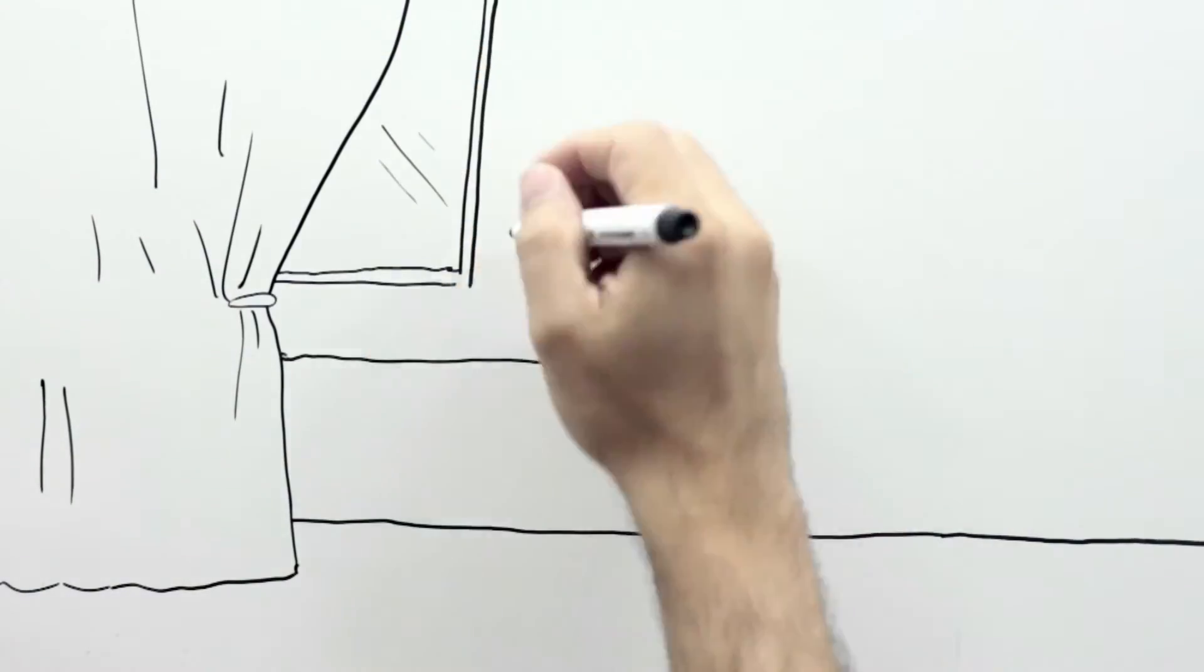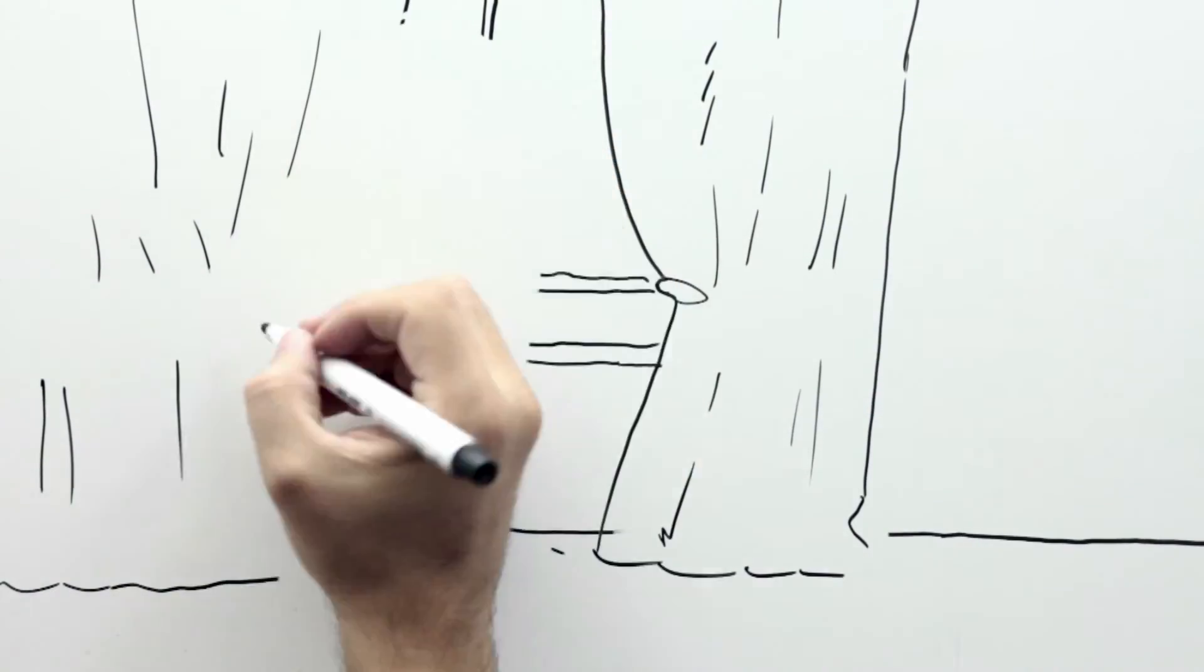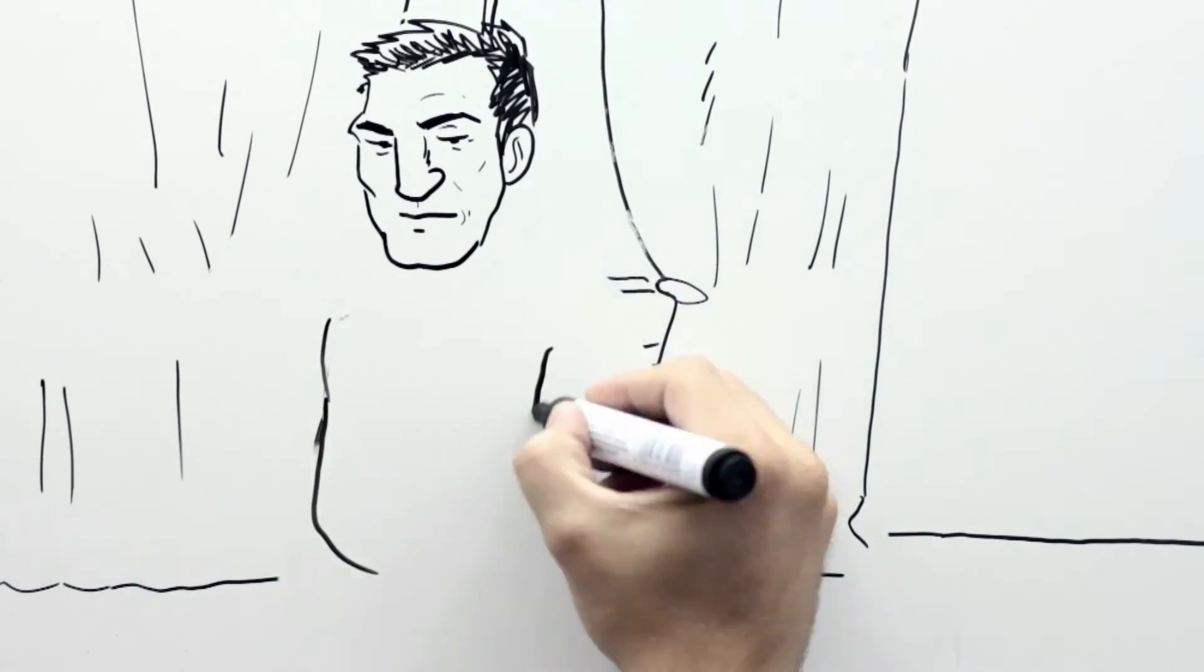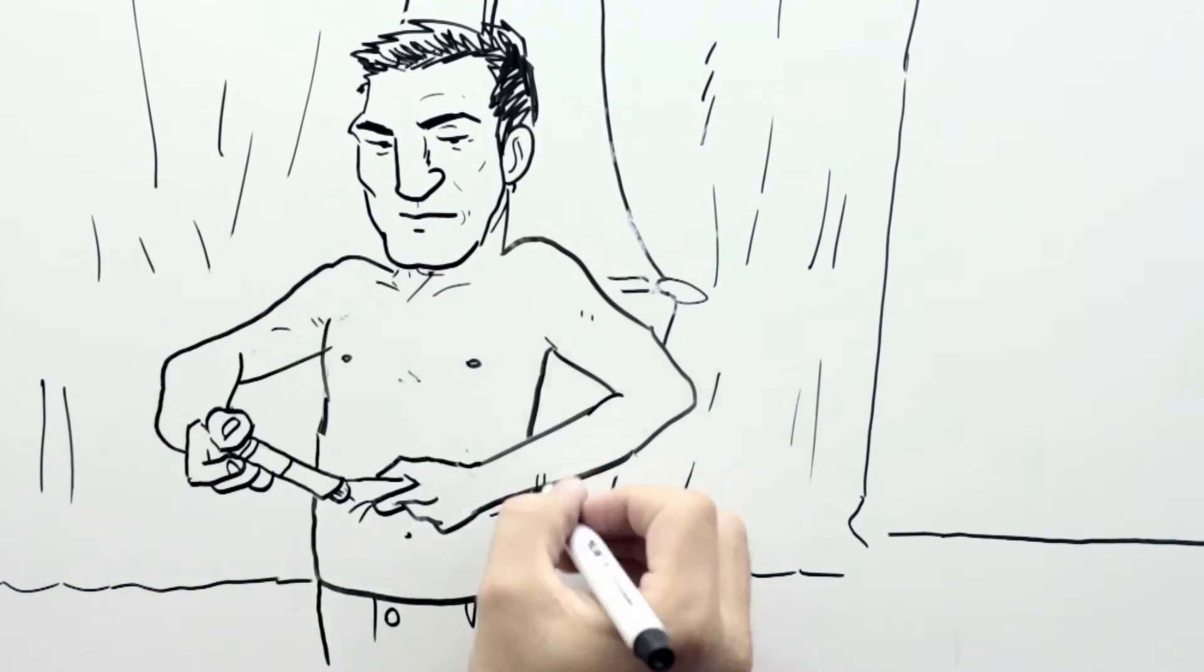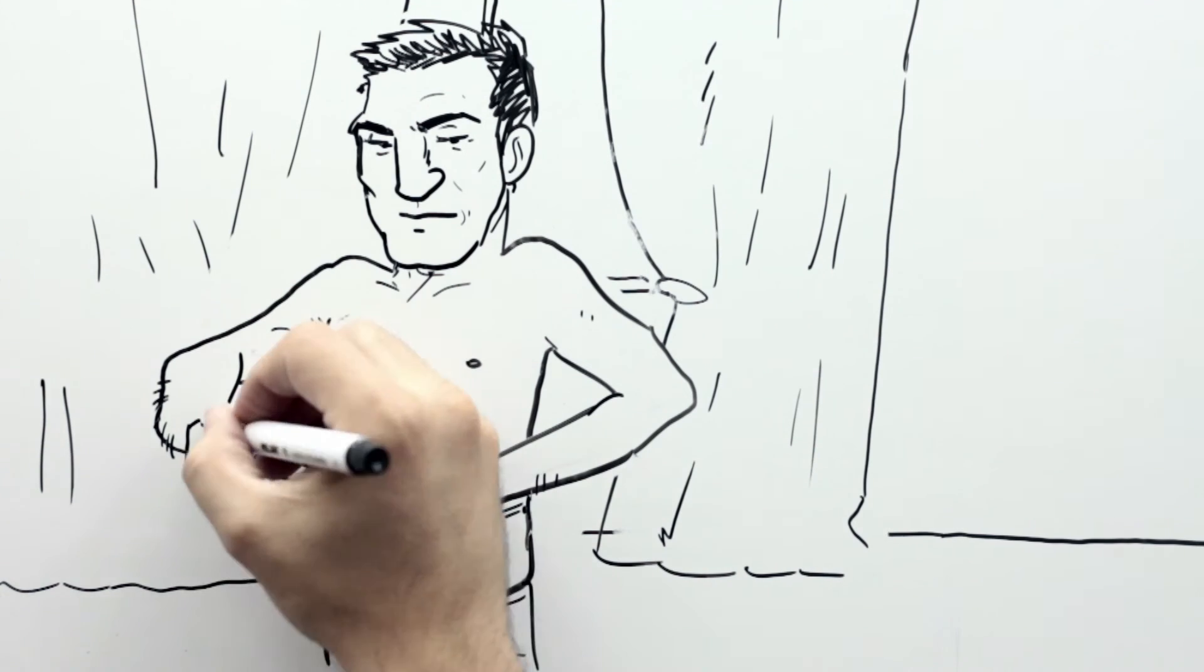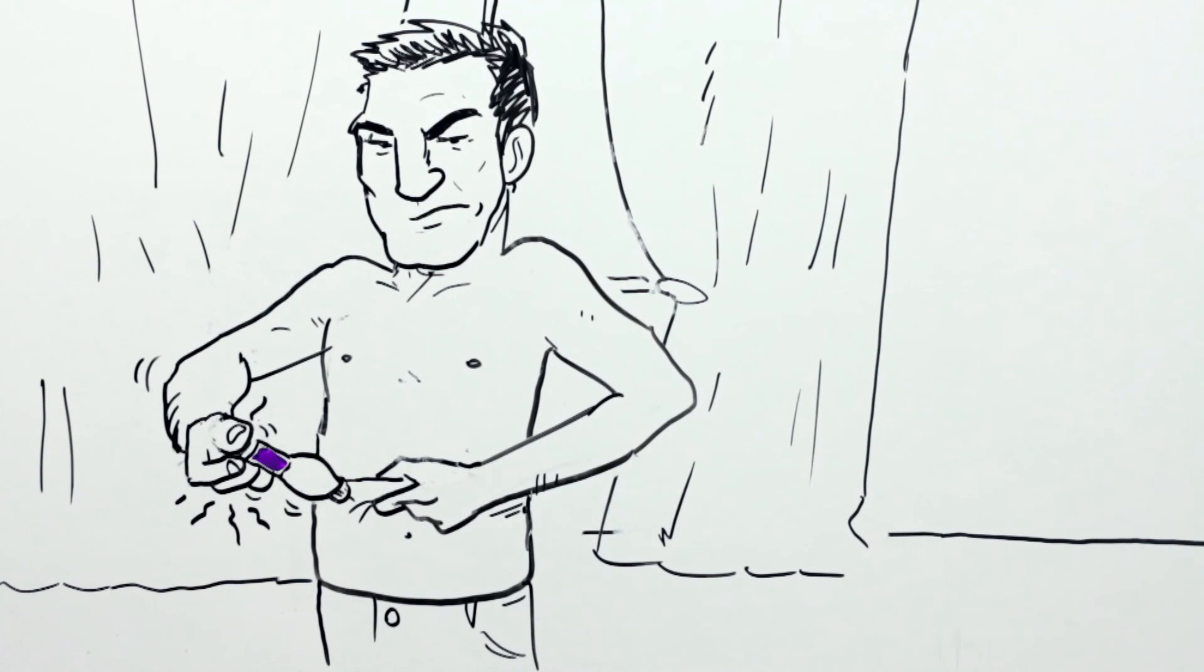The needle may become blocked, requiring excessive pressure to inject the dose, and in some cases prevents the complete insulin dose from being administered. The damaged tip of the needle and the lack of lubricant increase injection discomfort or pain.